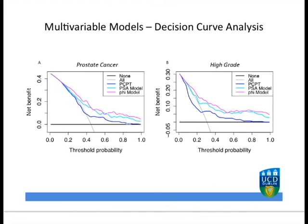I think the main message to take away is that in order to improve the decision for prostate biopsy, and hence the diagnosis of prostate cancer, a multivariable approach to patient risk stratification should be utilised. In this paper, we have outlined one method to improve this risk stratification through the use of the PHI score.